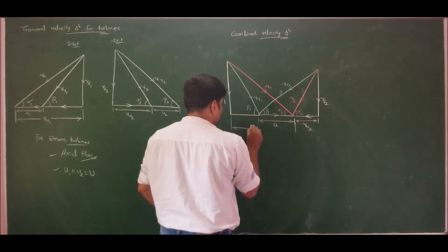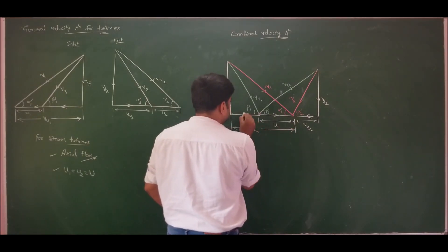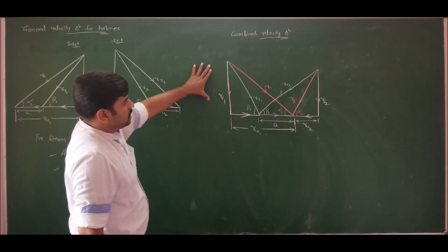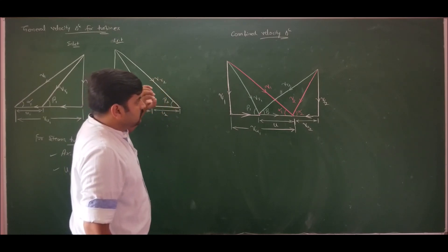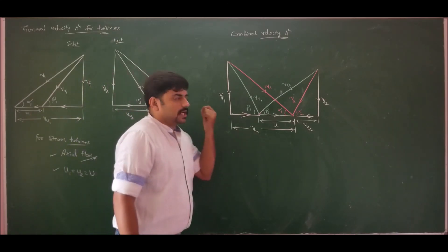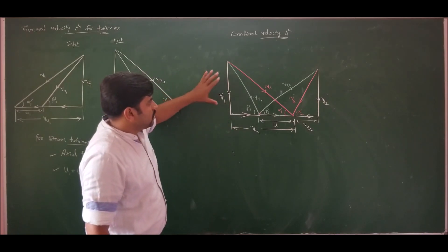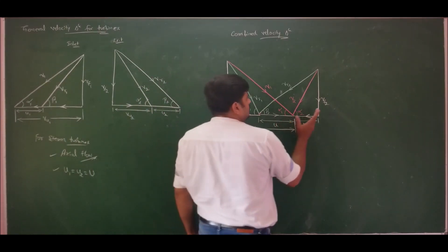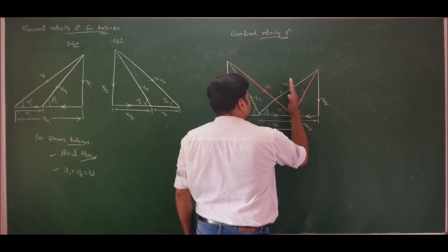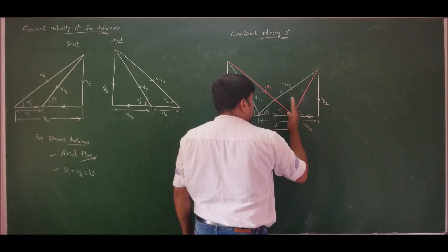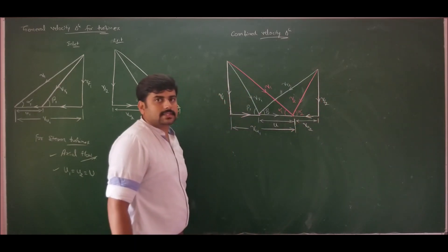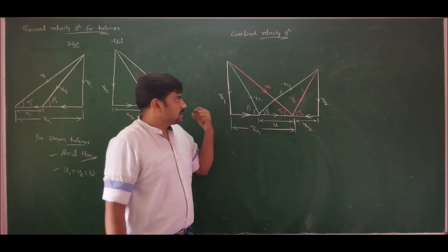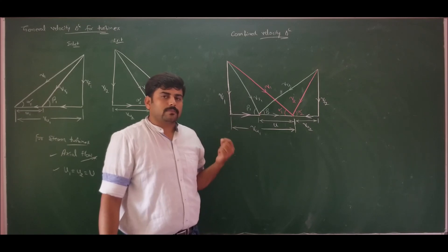The angle made by Vr2 is beta2 and by V2 is alpha2. Dropping a perpendicular gives Vf2. This is the combined velocity triangle that one must know to conduct analysis of steam turbines using the graphical method. Throughout this module we will use this combined velocity triangle. If the discharge is axial, then Vf2 equals V2, alpha2 equals 90 degrees, and only Vr2 joins directly. This combined velocity triangle is essential to solve problems graphically.